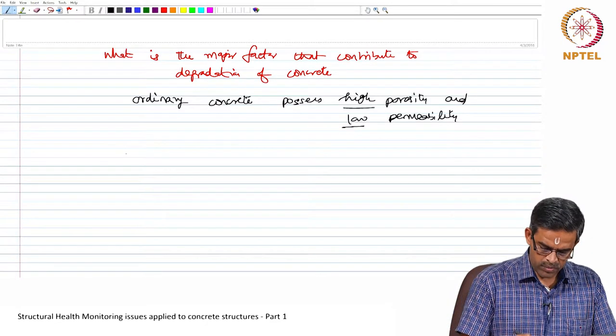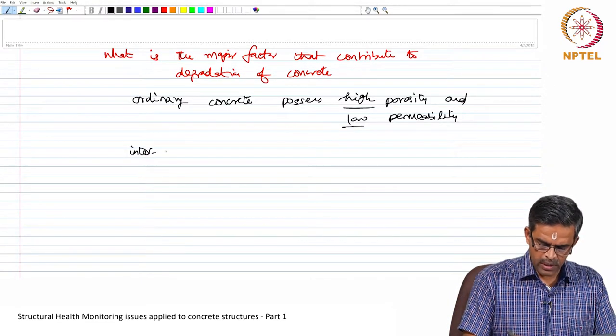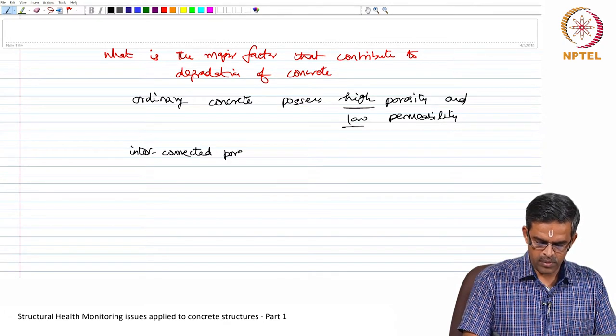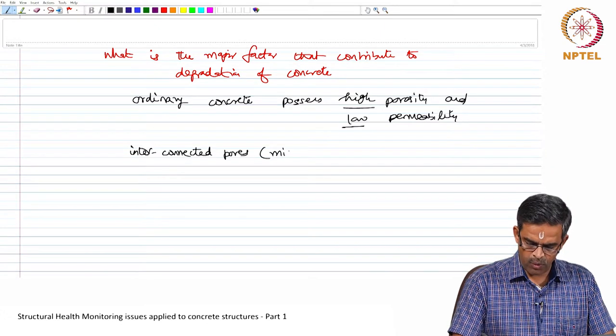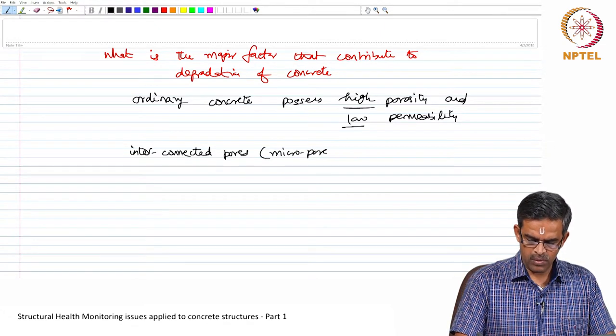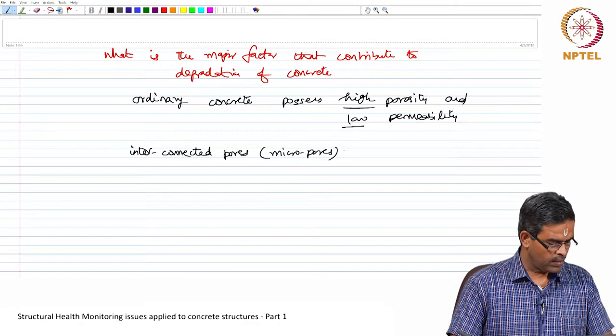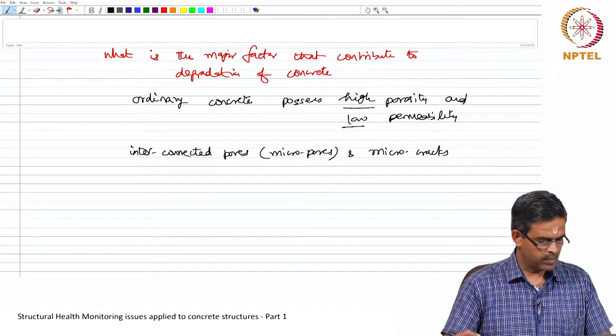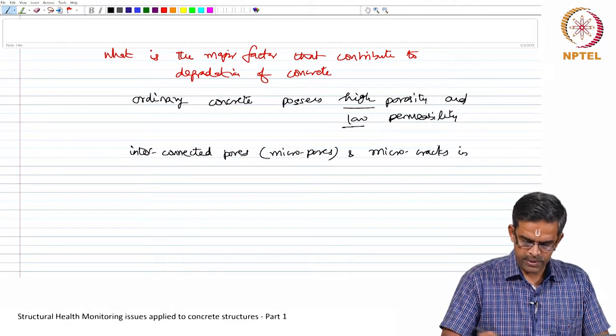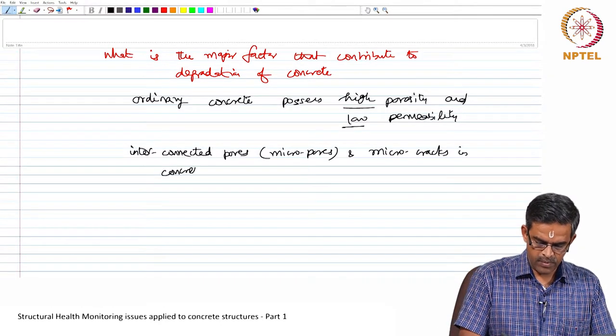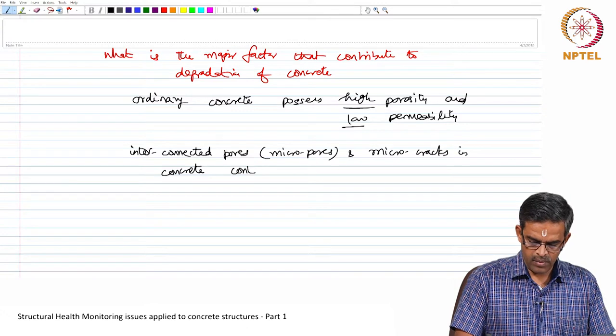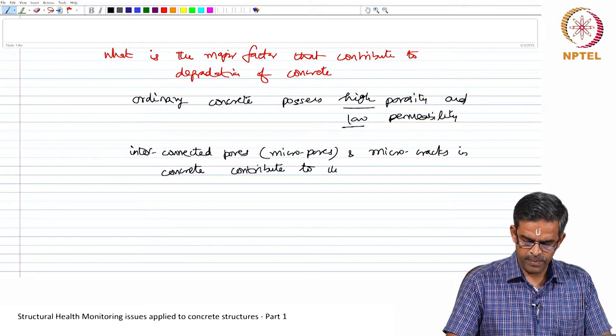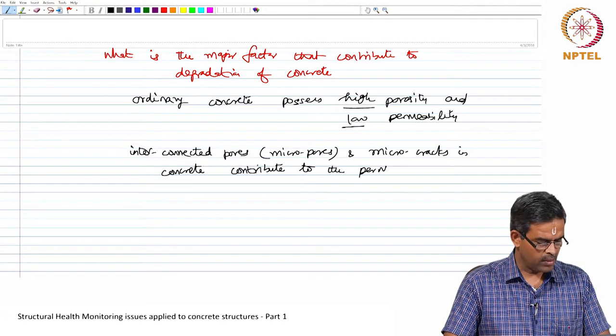Interestingly, ordinary concrete possesses high porosity and low permeability. Now, the interconnected pores, which I should say micropores and microcracks in concrete.